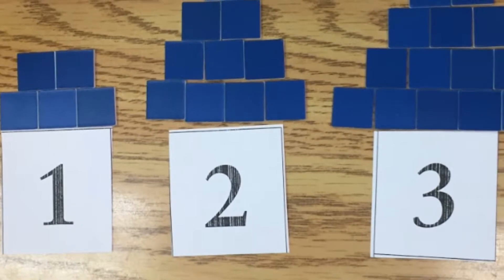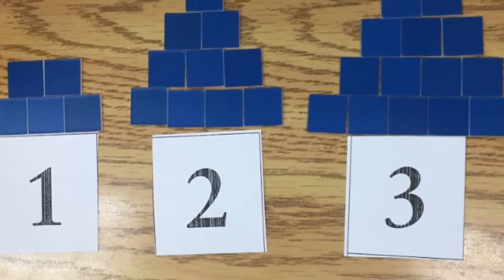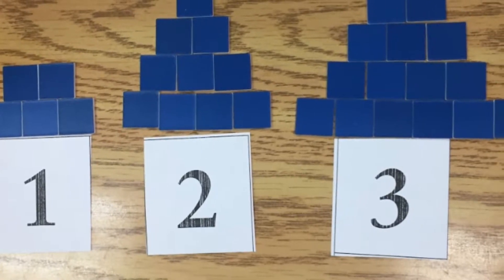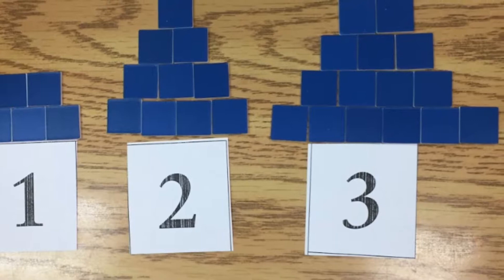After having a brief conversation with the student and saying how can you make your thinking more visible that at position two we have two groups of five and position three we have three groups of five, the student was able to reorder her tiles in a clearer way.